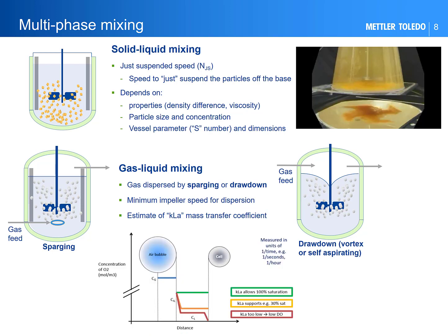The bottom plot shows the impact of KLA on the concentration profiles in a gas-liquid system — in this case, a bioreactor.